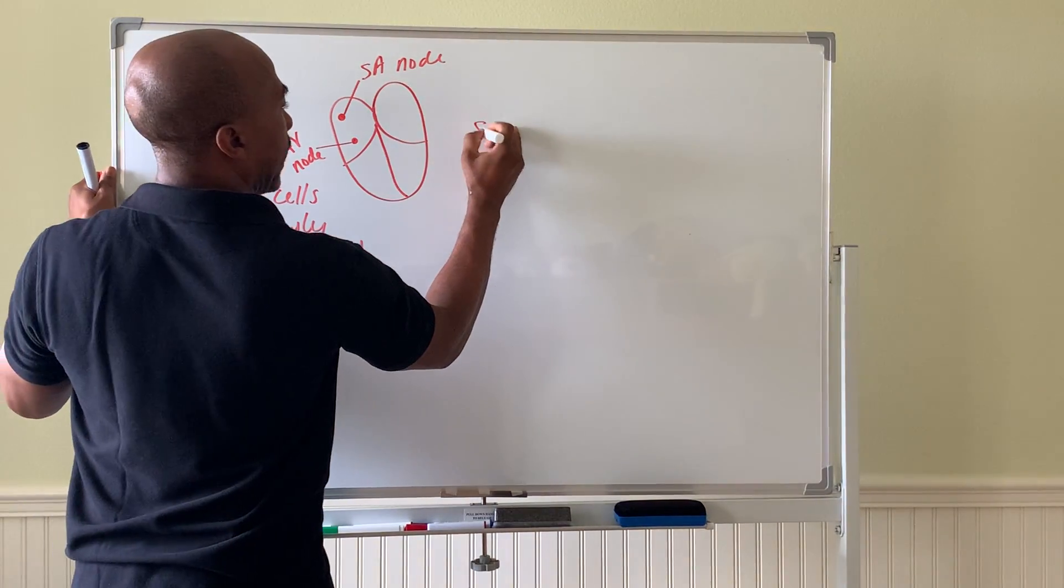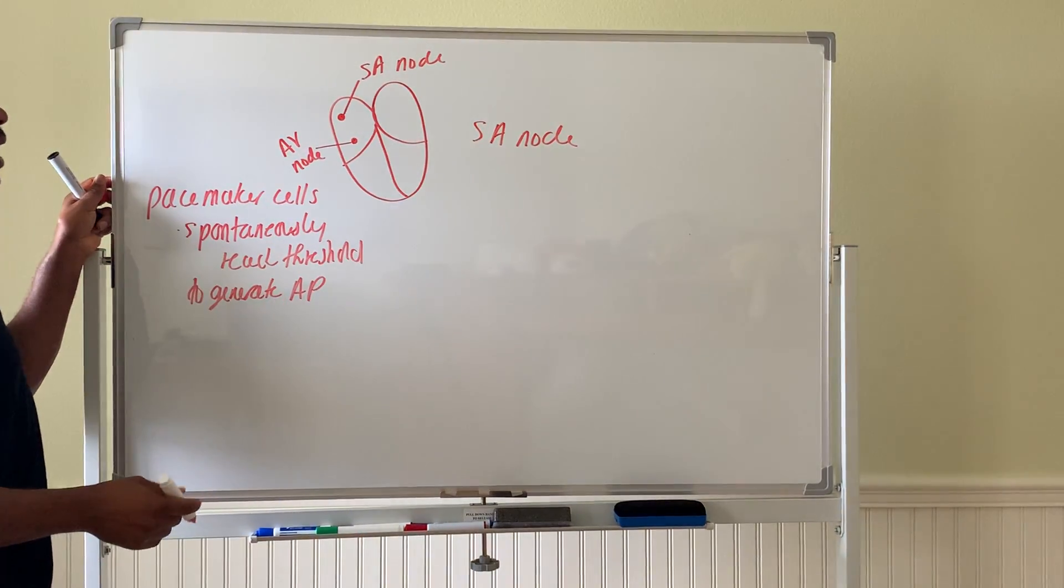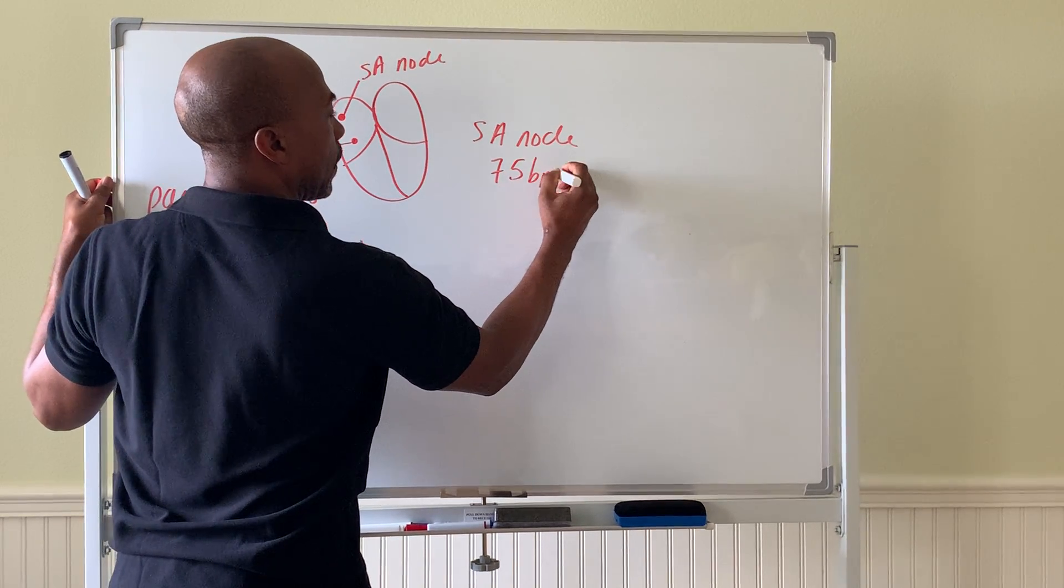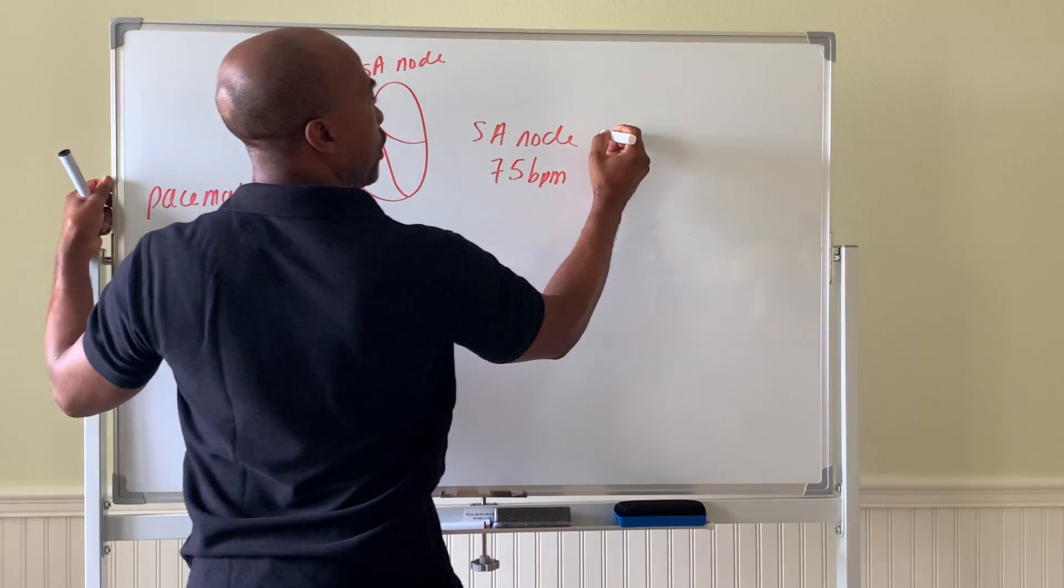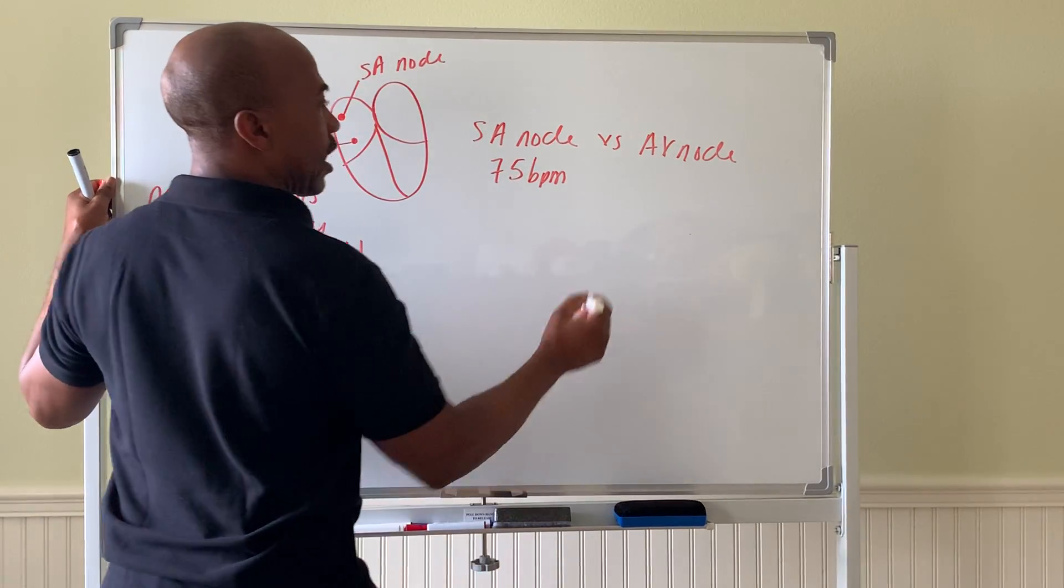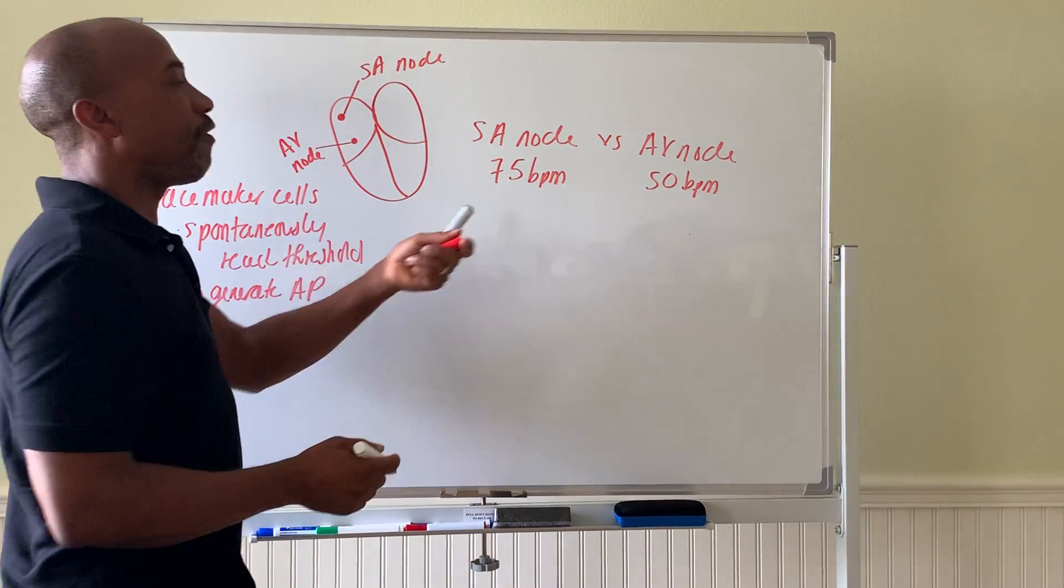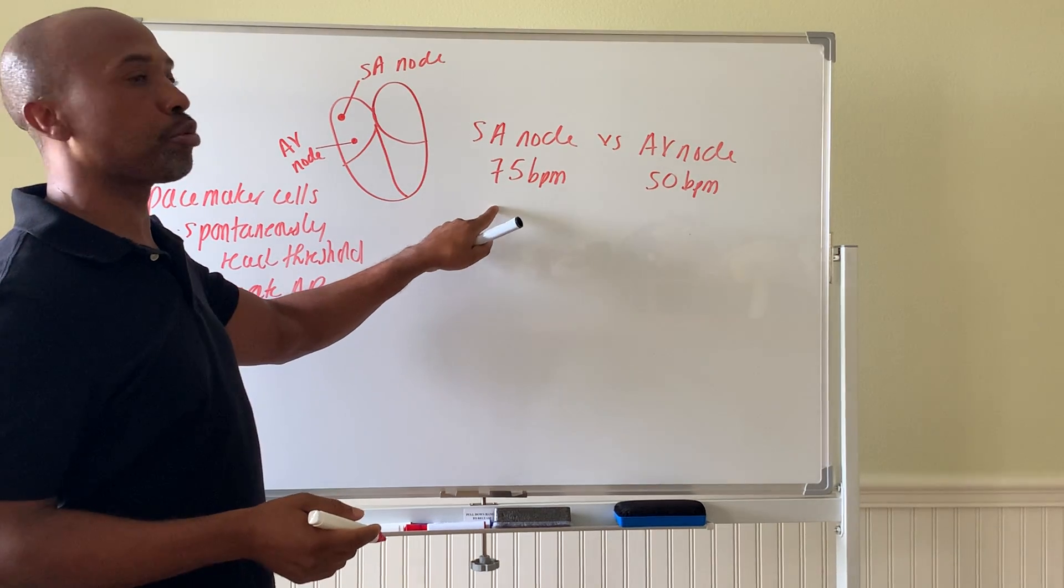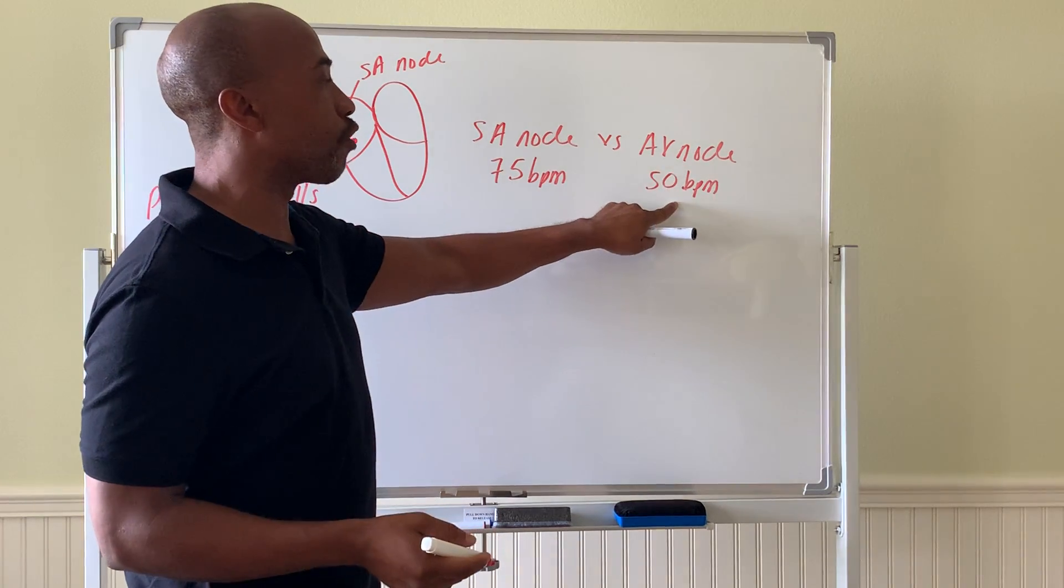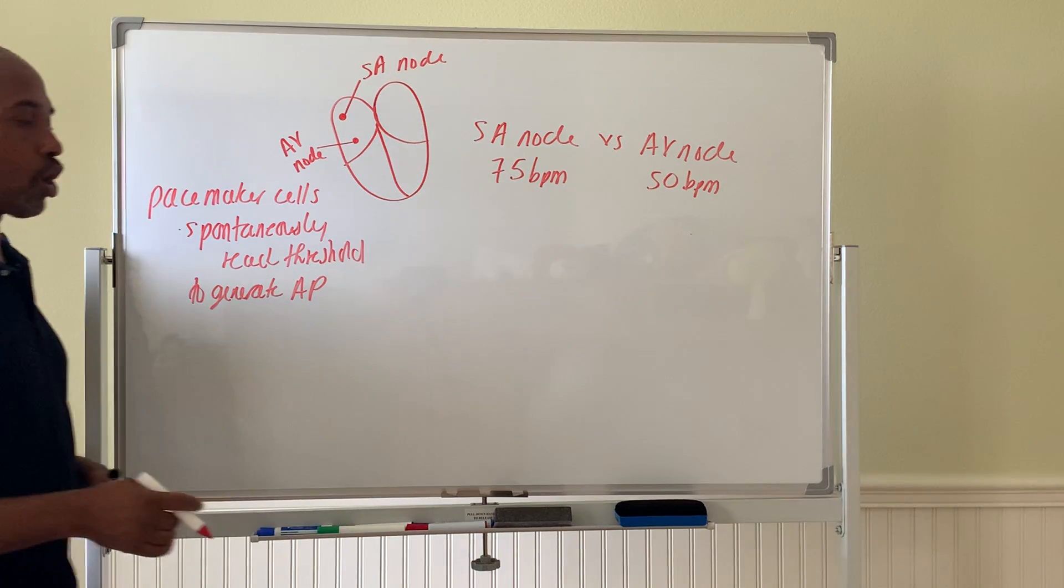The SA node cells will pace the heart about 75 beats per minute, while the AV node will pace the heart at around 50 beats per minute. So because this goes faster, this is called the true pacemaker of the heart. The AV node takes over when the SA node is damaged. So the SA is the real driver of the heart rate.